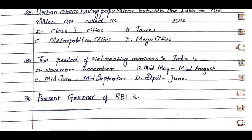Question 29: The period of retreating monsoons in India is. Option A. November–December, Option B. Mid-May to Mid-August, Option C. Mid-June to Mid-September, Option D. April–June. The answer is Option A. November–December.